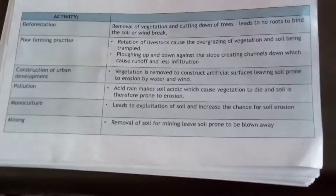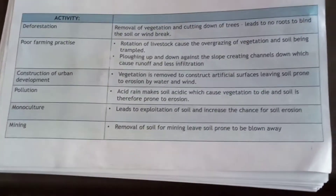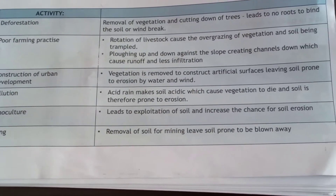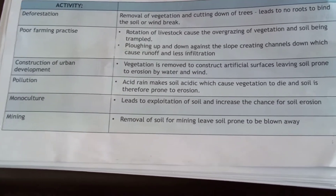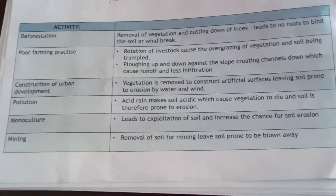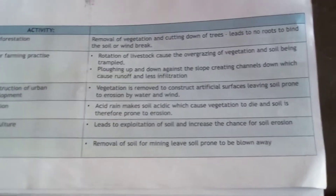Urban development construction has also led to soil erosion because vegetation is removed so that we can construct artificial surfaces like pavements and roads. In the process of removing vegetation to develop those areas, the ground is left bare and agents of wind and water can easily wash away our topsoil.